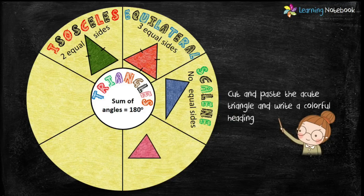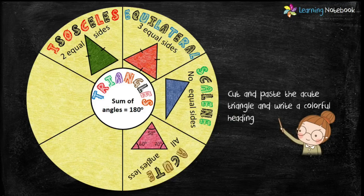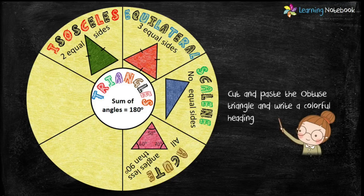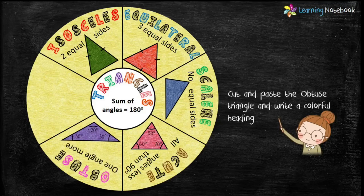With the help of a compass or a protractor, draw an acute triangle, then paste this acute triangle in the fourth sector of the wheel. After that, write a colorful heading along with its property — that all the angles are less than 90 degrees. Similarly, cut and paste an obtuse triangle in the next sector and then write its property — that one angle is more than 90 degrees.